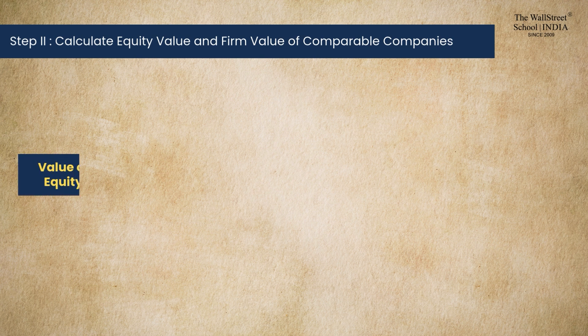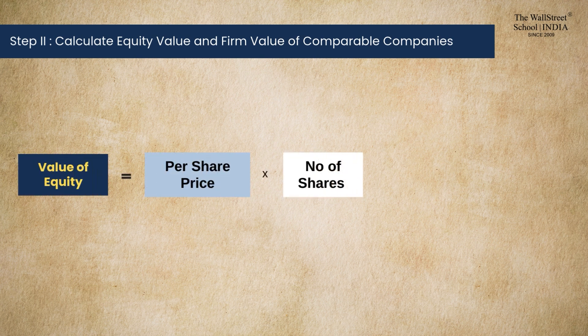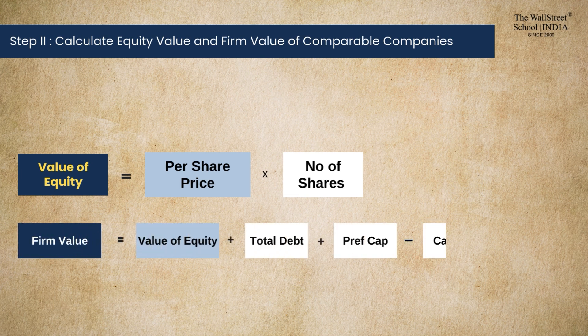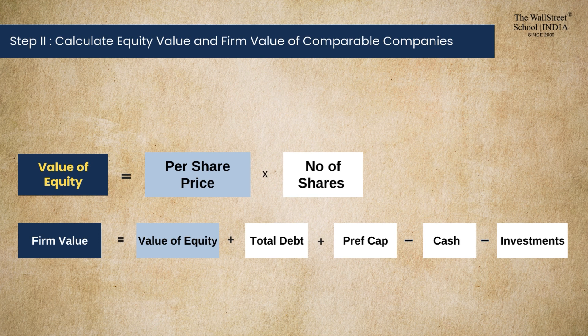Equity value is simply the share price at which these companies are trading in the market. For firm value, we add all sources of capital — debt, preference share capital, etc. — to find the total value of the business including all sources.